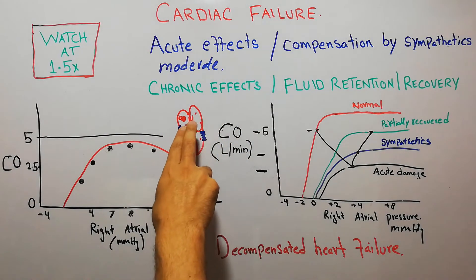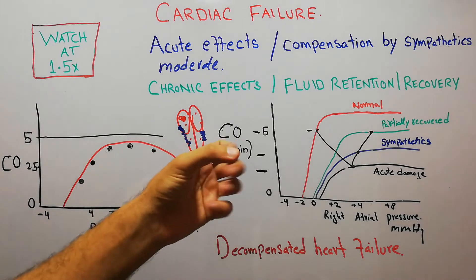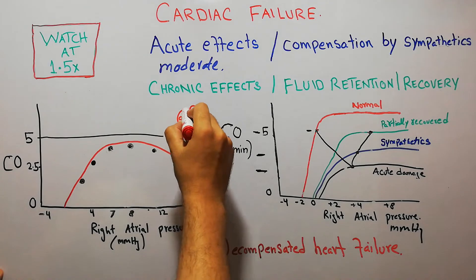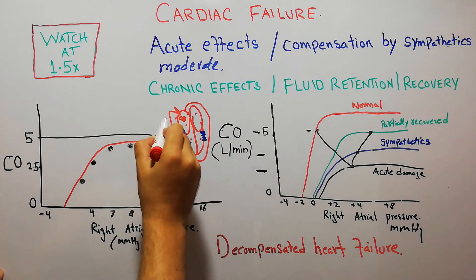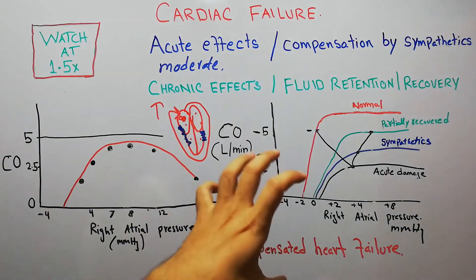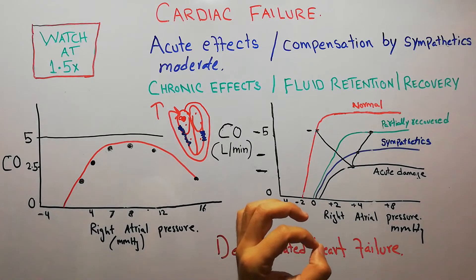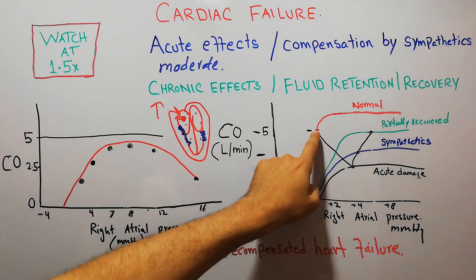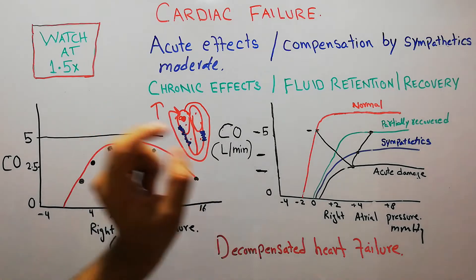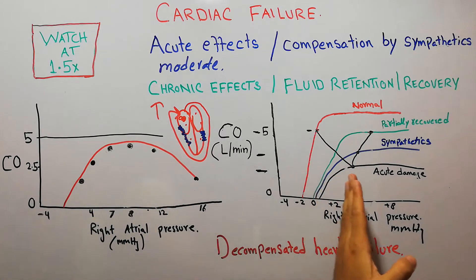The sympathetic nervous system activates the heart and peripheral blood vessels. The heart rate increases, the force of contraction increases, and the filling pressure increases. These changes occur within a few seconds. So the cardiac output slightly increases, but the right atrial pressure also slightly increases. After acute damage, the cardiac output decreased and RAP increased, but within seconds the sympathetic system increased cardiac output — though at the cost of increased right atrial pressure.